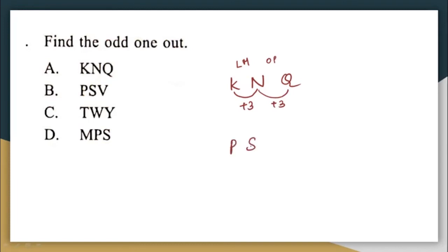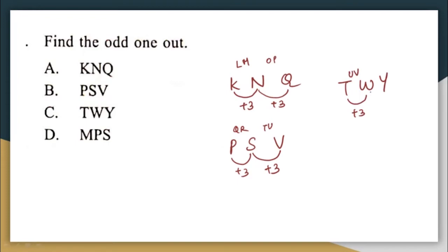Let us look at the pattern in P, S, V. Here again plus 3 — they missed out Q and R, and after S they missed out T and U, so again plus 3. Now look at option C: T, W, Y. Here again plus 3 — they missed out U and V. After W, they should miss out X and Y, and this has to be Z. But what have they written? They missed out only X, making it plus 2. W, then X, then Y — they should have missed X and Y for Z. But it is given as Y, so this is definitely our odd one out.